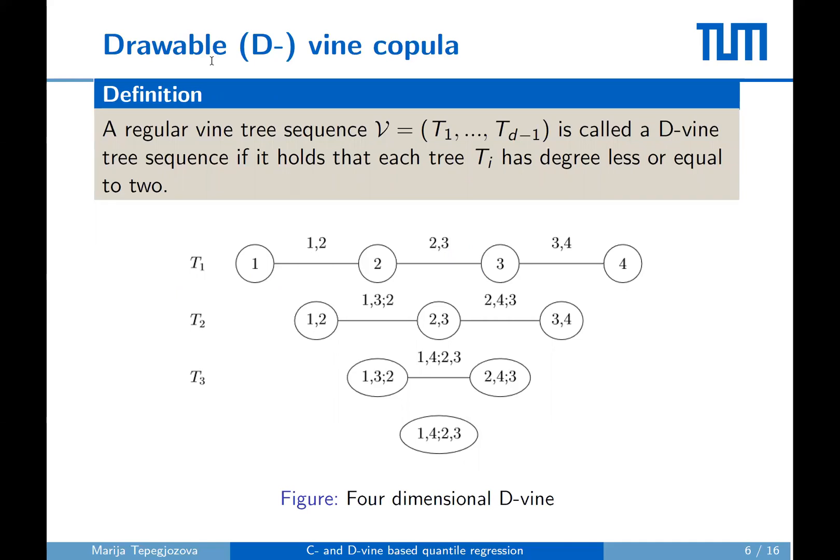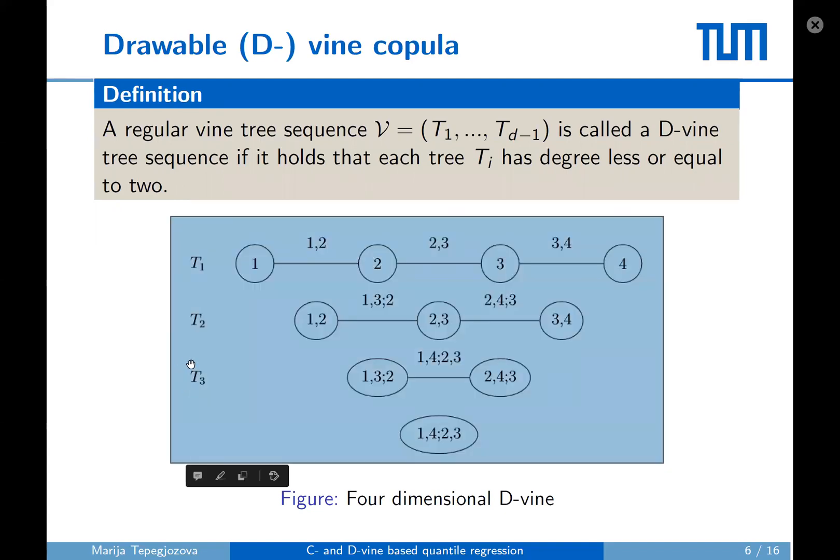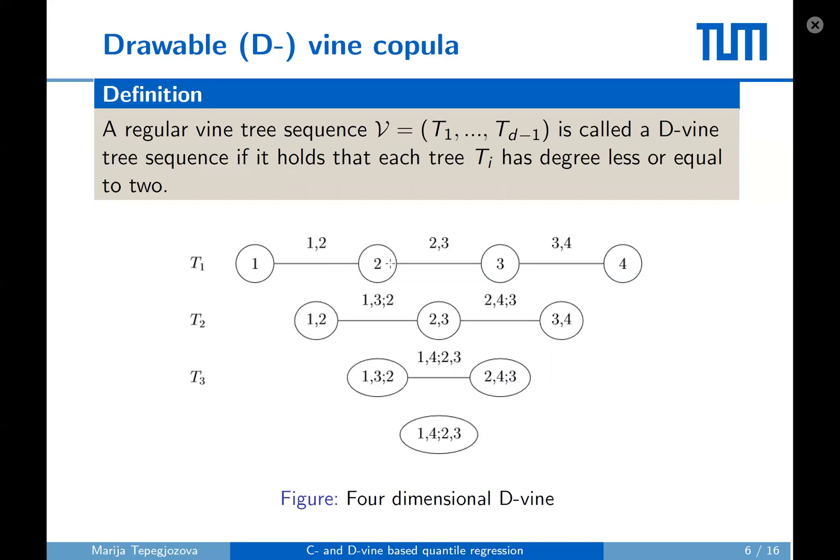In our work we concentrate on two specific classes arising from the pair copula construction. The first one are drawable vines or D-vines. Their tree sequence contains only paths. An example of a four-dimensional D-vine is given in the picture where the nodes in the first tree represent the variables. So we have one, two, three, four, and the edges represent the pair copulas. The joint density specified by this D-vine is obtained as the product of the copula densities corresponding to each edge.